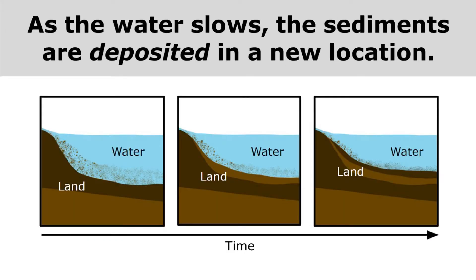As the water slows, the sediments are deposited in a new location. And in the diagram, you can see how deposition creates layers of sediment.